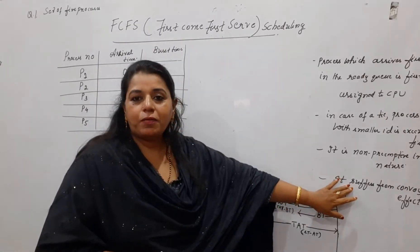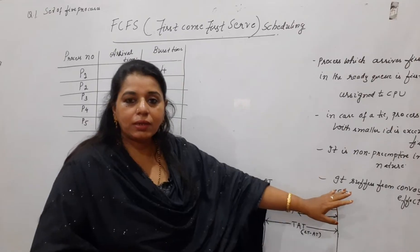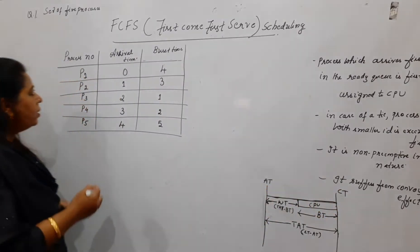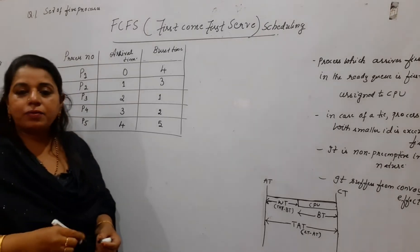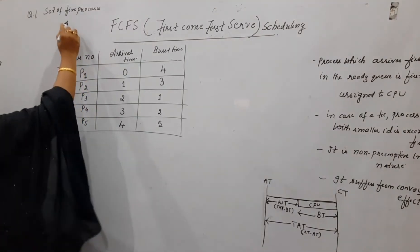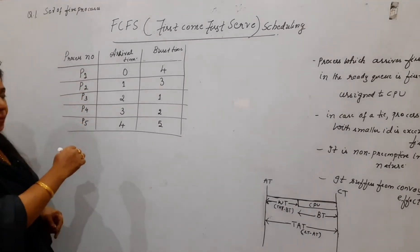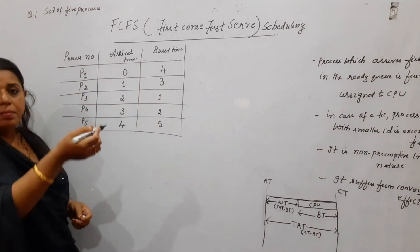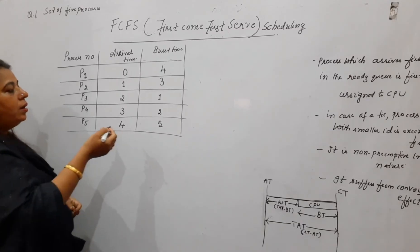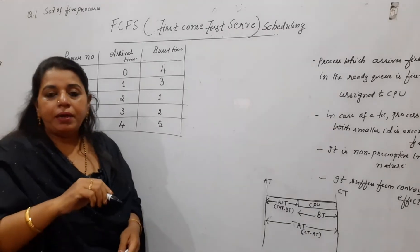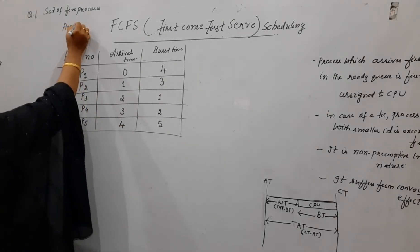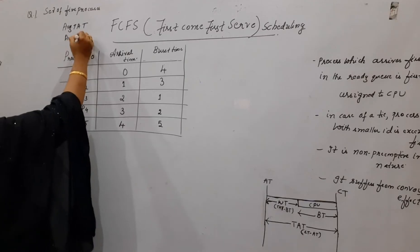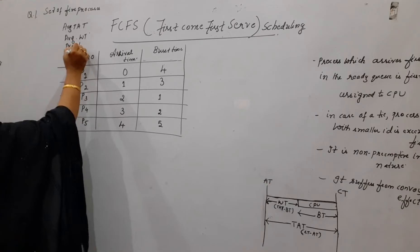It has one disadvantage — it suffers from the convoy effect, which I will explain at the end of the session. Now let us begin the problem. The problem is normally asked for 6 to 7 marks. Consider a set of 5 processes whose arrival time and burst time in milliseconds is given. The problem asks you to find the average turnaround time, average waiting time, and average response time.